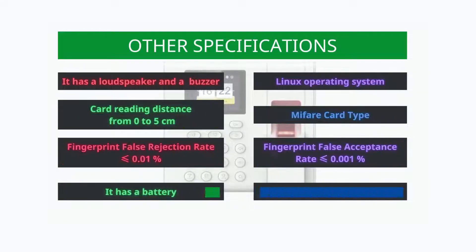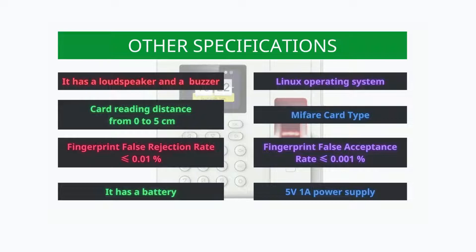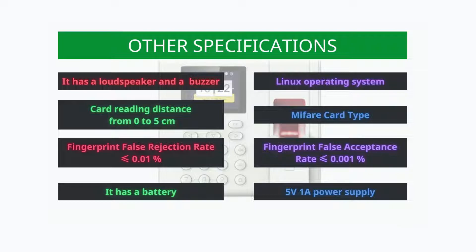Other specifications include a Linux operating system, loudspeaker and buzzer, and Mifare card type. Card reading distance is 0 to 5 cm. Fingerprint false acceptance rate is less than or equal to 0.001%, and false rejection rate is less than or equal to 0.01%. Power supply is 5 volts and 1 ampere, and it has a battery.